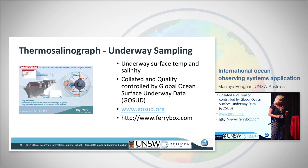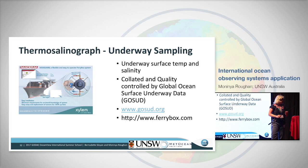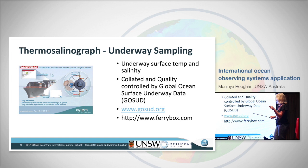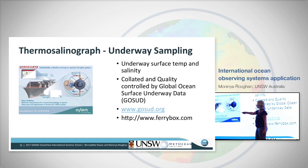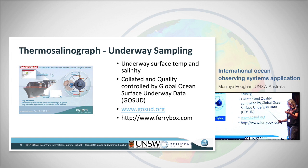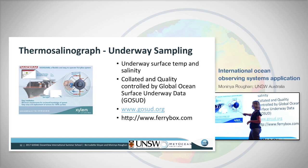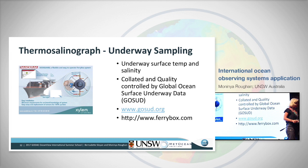Another program is underway thermosalinograph sampling — measuring sea surface temperature and salinity at the sea surface. Many ships now install the instrument through an intake pipe at 7 to 10 metres below sea level, and the information is relayed by satellite. This information is critical for understanding changes in temperature and salinity that go into the operational programs.